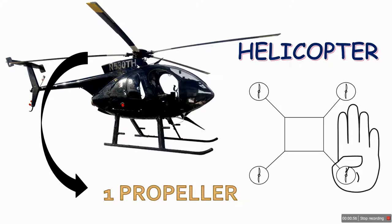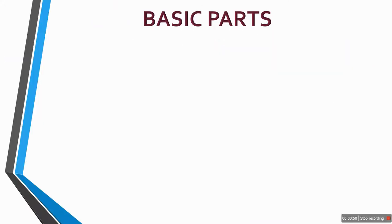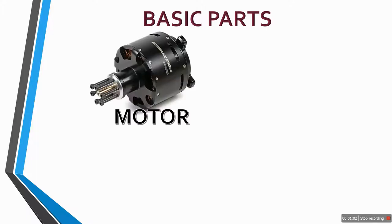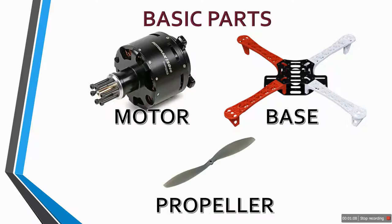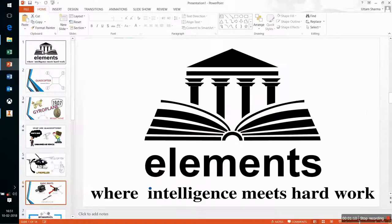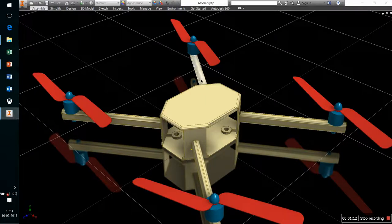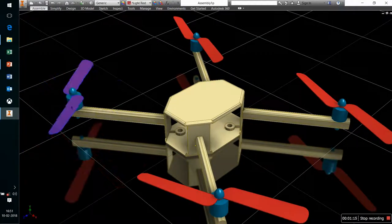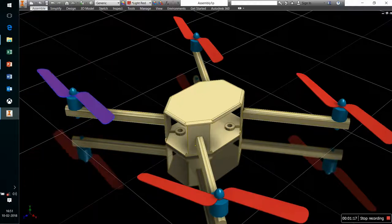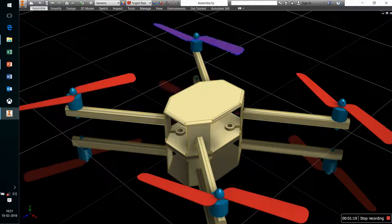Now let's take a look at the basic parts of the quadcopter. We have a motor, a light base, and a propeller. Let us take a look at the CAD model for better understanding. This is the motor-propeller system — these are the four propellers and these are four motors.